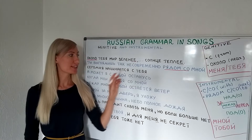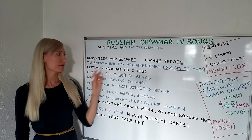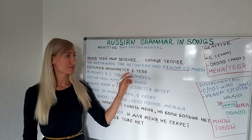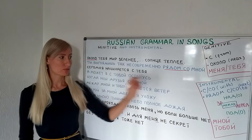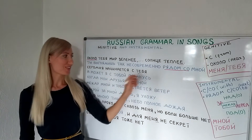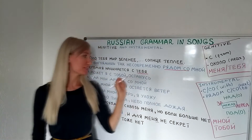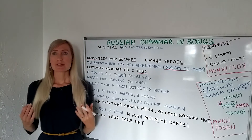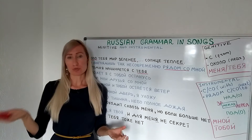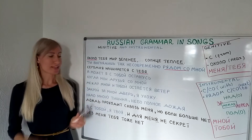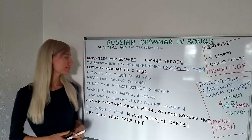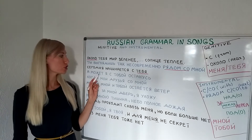The next song example: 'Сегодня начинается с тебя' — 'сегодня' means 'today', 'начинается' means 'starts'. 'Сегодня начинается с тебя' — today starts from you. We know that 'тебя' is the genitive form, so 'с' here means 'from'. It's like saying 'my day starts from thinking about you'.